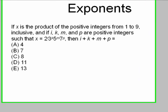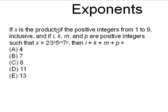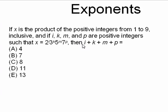Exponents. If x is the product of the positive integers from 1 to 9, inclusive, and if i, k, m, and p are positive integers such that x equals this expression, then the sum of these exponents must be what?